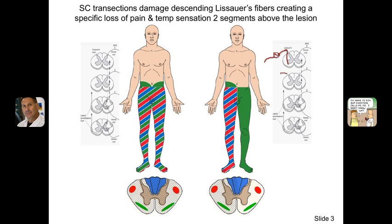That accounts for Brown-Séquard syndrome. On the left side of the slide, we have an entire transection of the spinal cord, and the same thing occurs but on both sides. There is an extra area two segments above the level of lesion. This is the thoracic cord, and we have an extra loss of pain and temperature up to T10, due to the loss of C-fibers coming in and descending two segments. So if we cut right there, we've actually cut those fibers on their way down.